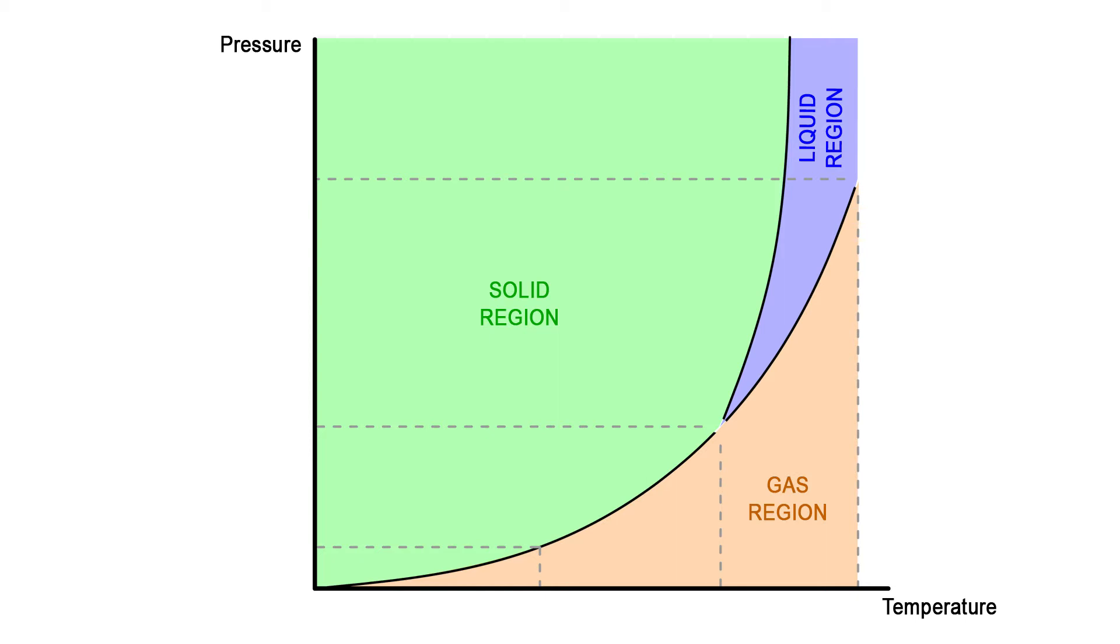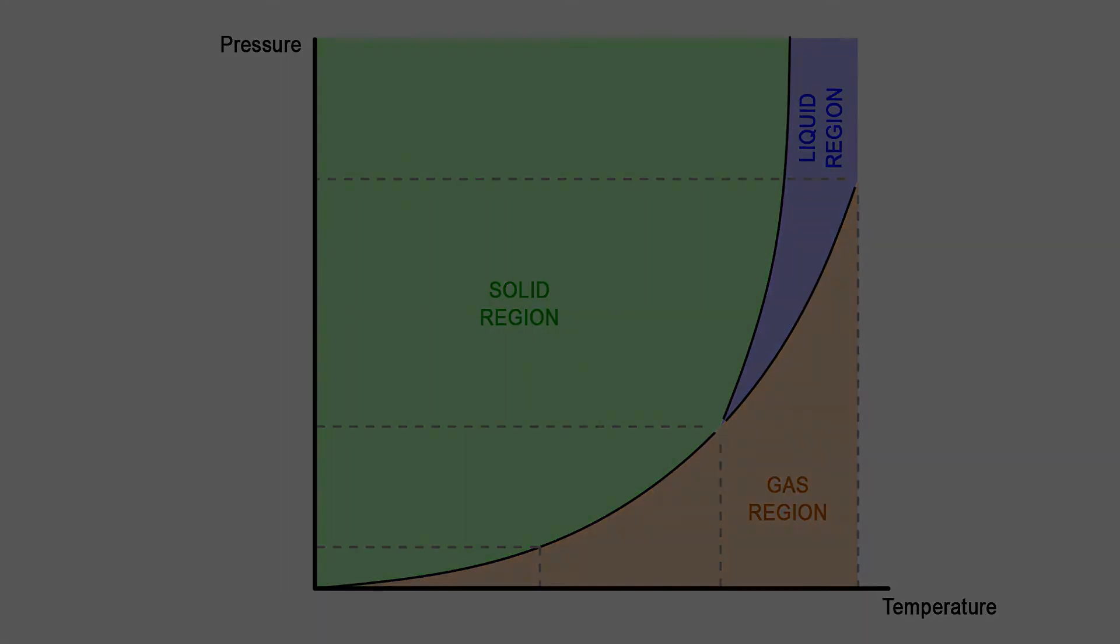So on Earth, we only experience carbon dioxide as a gas, which we exhale, and as a solid in the form of what is known as dry ice, which is colder than the sublimation temperature of negative 78.5 degrees Celsius.